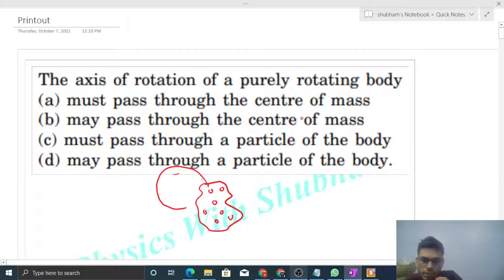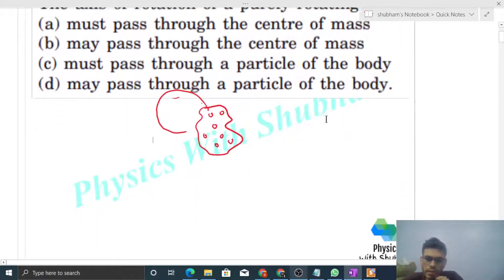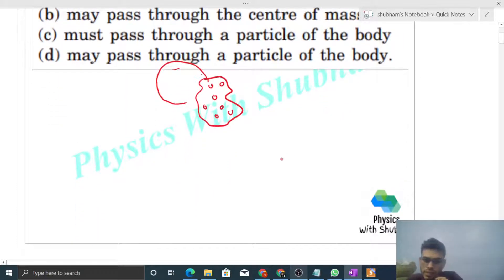So the axis must pass through the center of mass. If the axis will not pass through the center of mass, then can we move all the particles in a circular path?